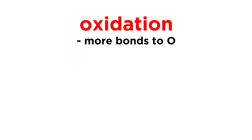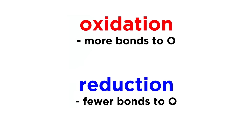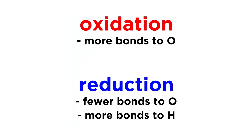From now on, we will think of an oxidation as a reaction that increases the number of bonds to oxygen that an atom is participating in, and a reduction as a reaction that decreases the number of bonds to oxygen, and typically increases the number of bonds to hydrogen that an atom is participating in.